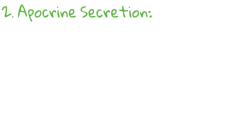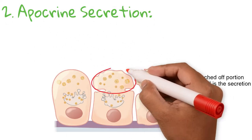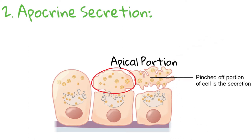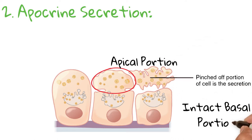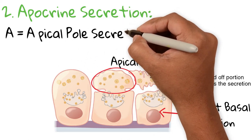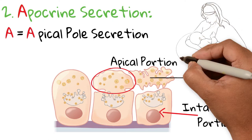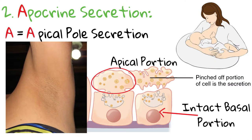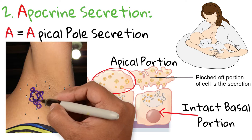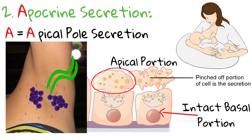Apocrine secretion involves the secretion of the apical portion of the cell, which contains the secretory product, while the basal portion containing the nucleus remains intact. To remember this, the A of apocrine is related to secretion of the apical pole. Examples of these glands are mammary glands and sweat glands in axillary and genital areas. These glands release fatty secretions that local bacteria break down, causing body odor.